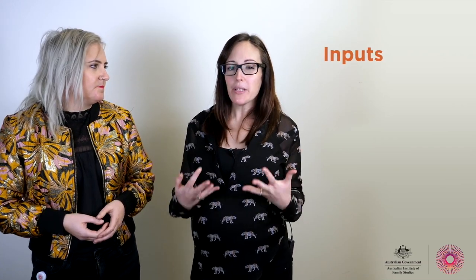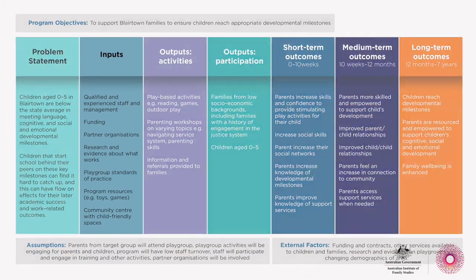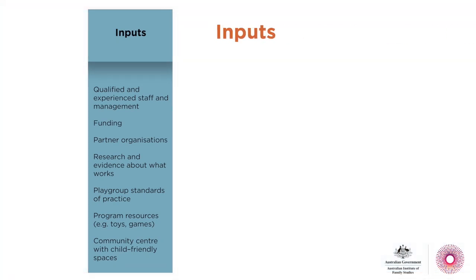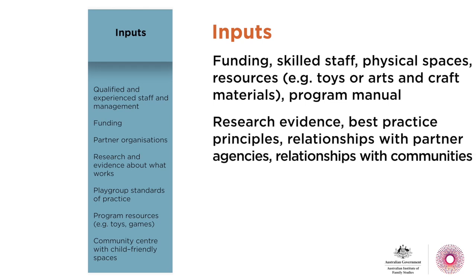Now let's focus on populating the inputs and outputs columns, starting with inputs. Inputs are the resources you allocate to address the problem identified in your problem statement. Common inputs include all the tangible things you need to run your program: funding, skilled staff, physical spaces, resources like toys or arts and crafts materials, and of course your program manual or guidance. Then you've got non-material things such as research evidence about what works or best practice principles. You also have relationships with partner agencies — for referrals or in-kind contributions — and existing relationships with the community, which could be crucial to program success.